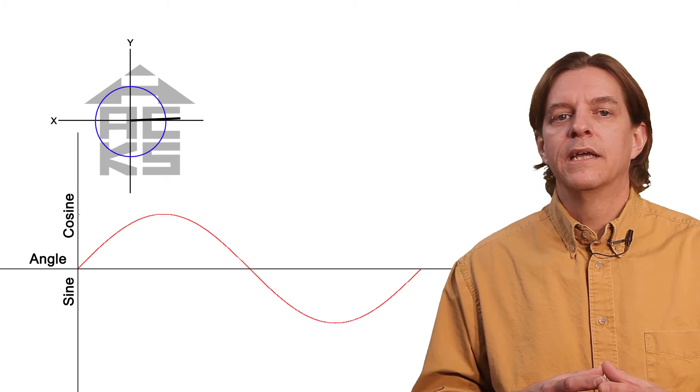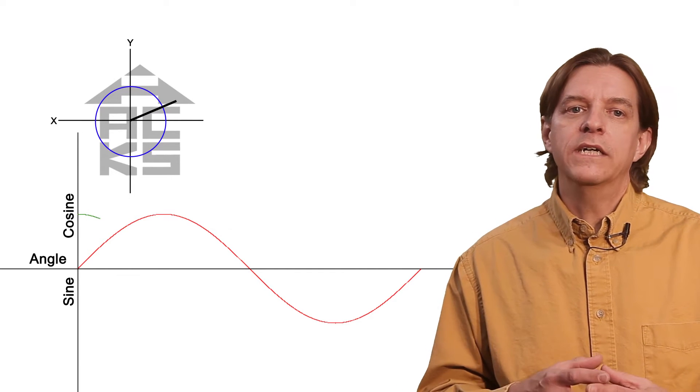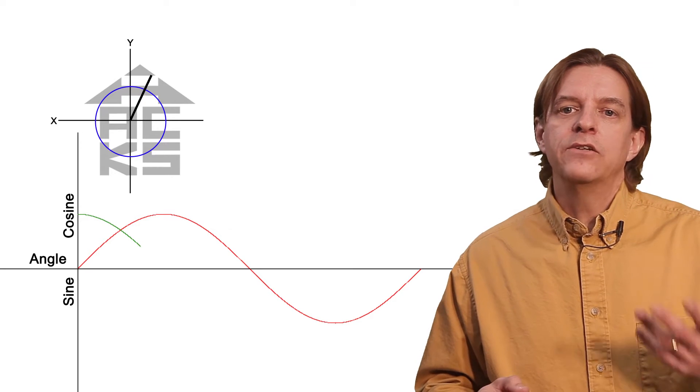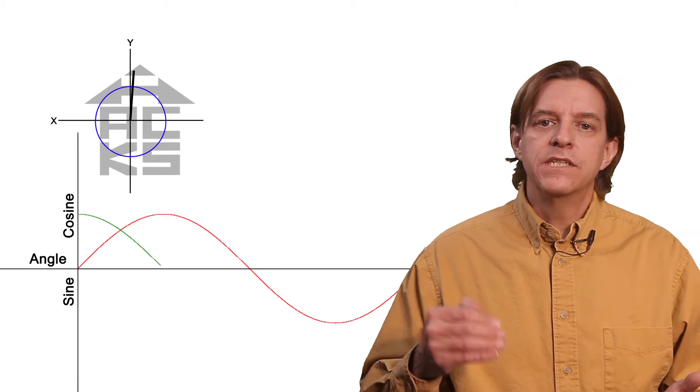Now, doing the same thing with cosine, at 0 degrees, cosine is 1 since it represents the x value on the circle. As the angle increases, x decreases to 0 at 90 degrees.